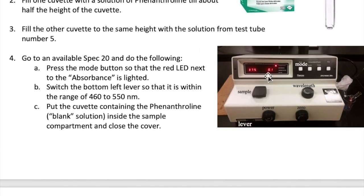Going back to the procedure, let me first describe the different controls in the Spec 20. You have the mode button, which is located here, the sample compartment, the wavelength knob, the power knob, the zero knob, and a lever at the bottom left. What you want to do first is press that mode button so that the light here changes to the line that's marked absorbance. Then switch the lever at the bottom left so that it's in the wavelength between 340 and 599 nanometers.